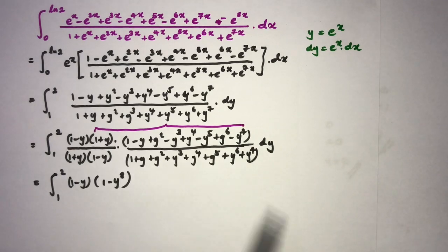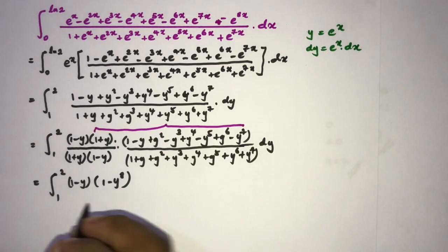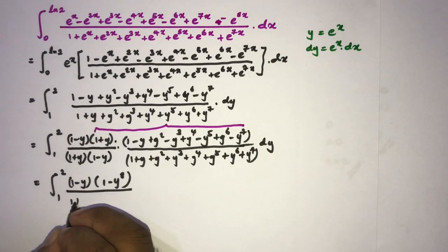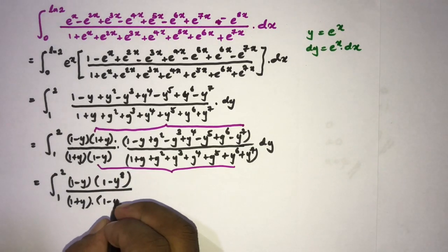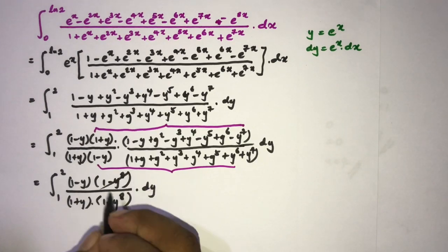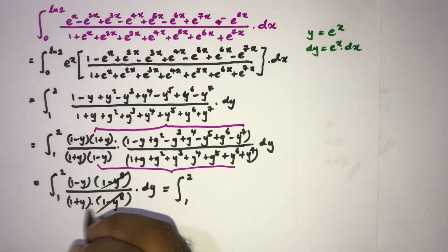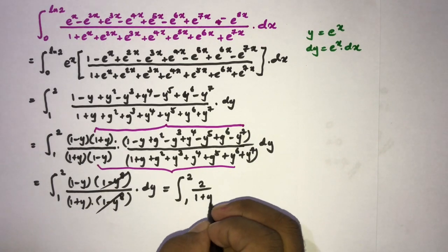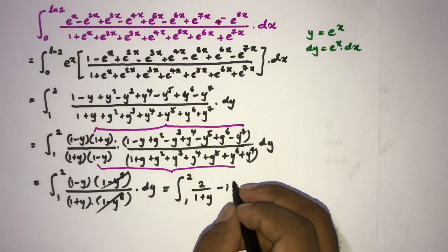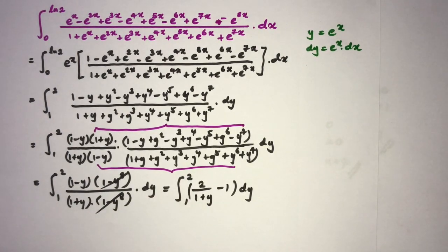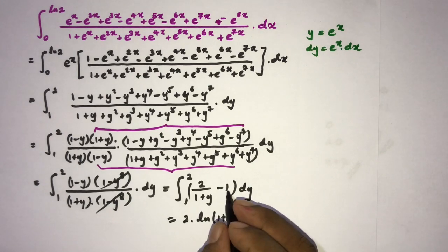This is an interesting fact you should remember, as it is useful in various problems. The denominator (1 plus y) times the geometric series equals 1 minus y to the 8th power as well, so those parts cancel. We simplify what remains to 2 over (1 plus y) minus 1, and integrating from 1 to 2 gives 2 times natural log of (1 plus y) minus y, evaluated from 1 to 2.